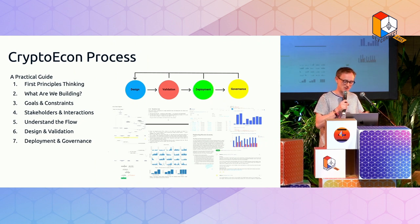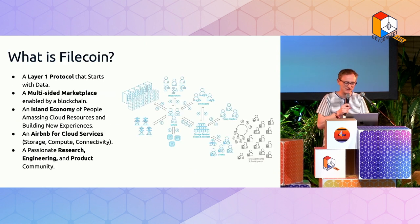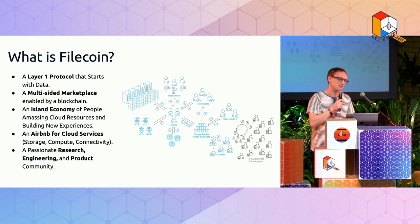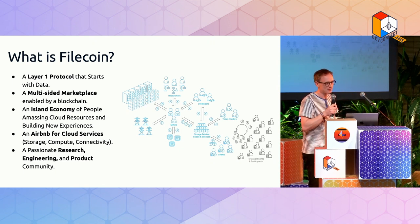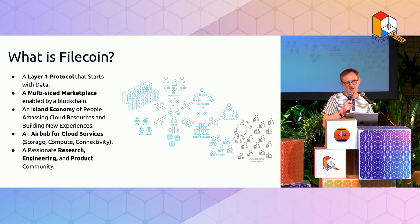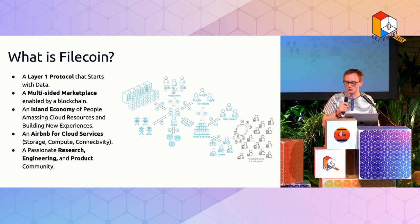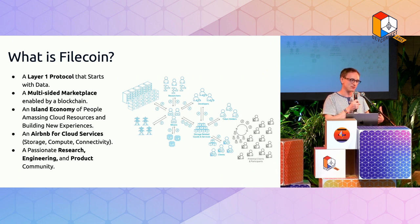What is Filecoin? It's a layer-one protocol where data is front and center. In other layer ones like Ethereum, utility flows from securing the chain, but in Filecoin it's almost the other way around: storing information is front and center, and this creates the consensus mechanism which secures the chain. Other utilities flow from this, but data really is the core.